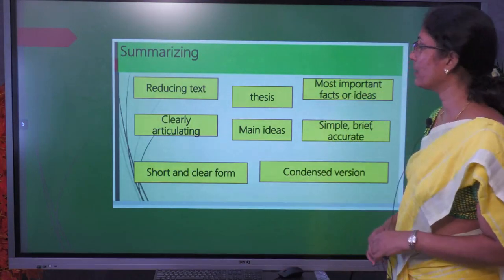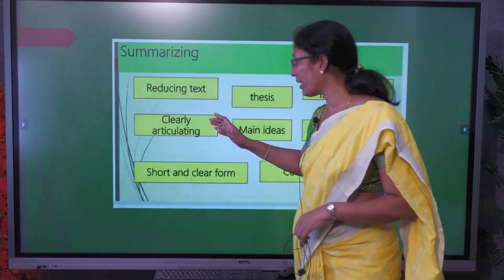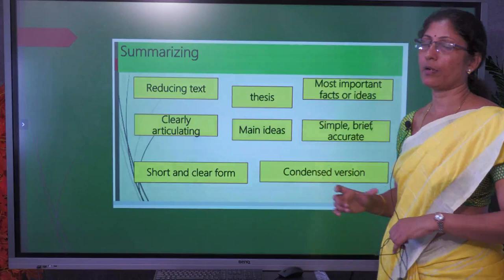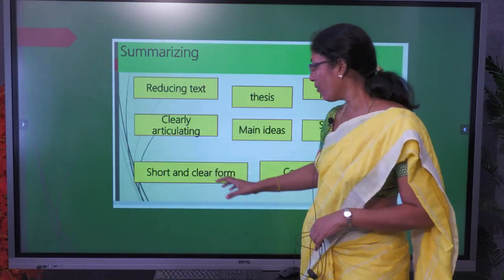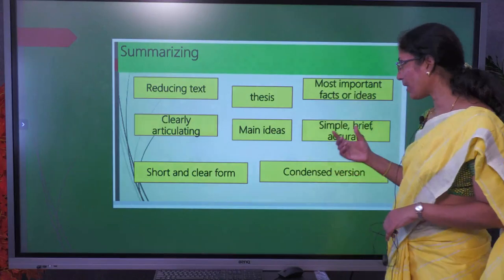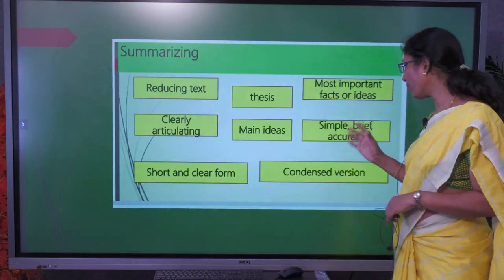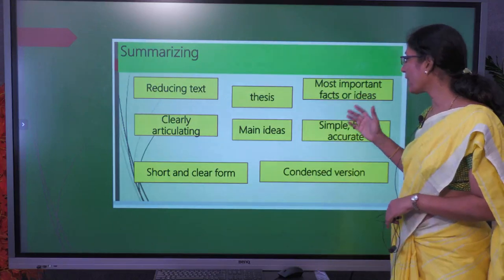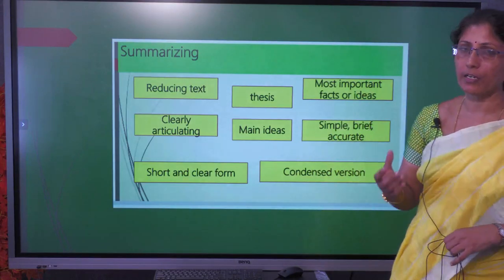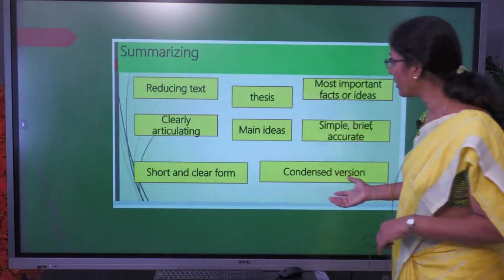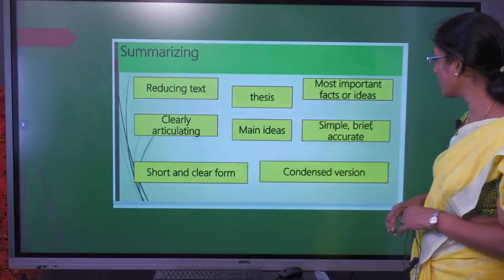Summarizing is also called reduced text. We represent only the main ideas and clearly articulate what the content is. In summarizing we present in a clear and short form. A summary is a condensed version of the original text — simple, brief, and accurate — consisting of the most important facts or ideas, just like a thesis stating the exact information.